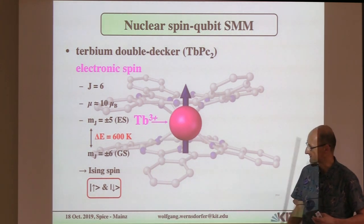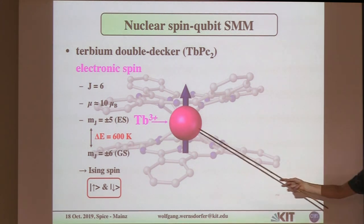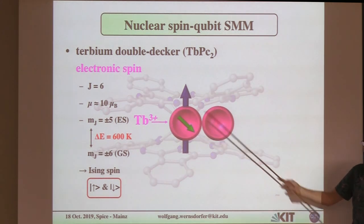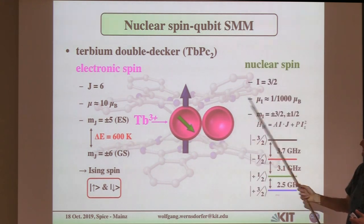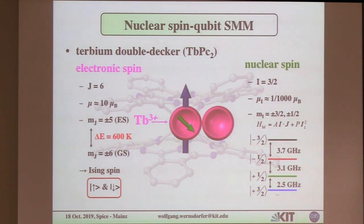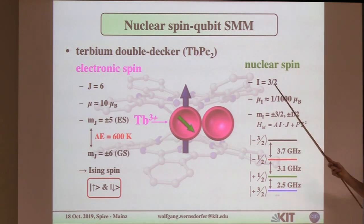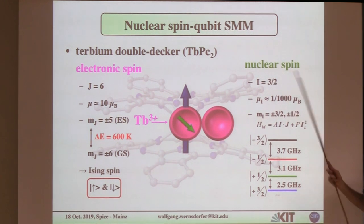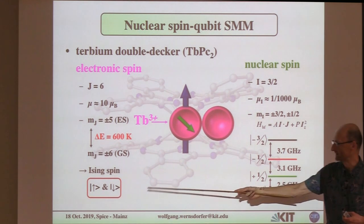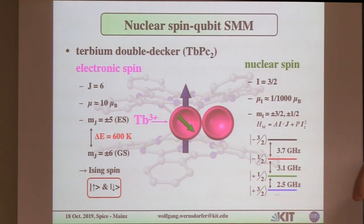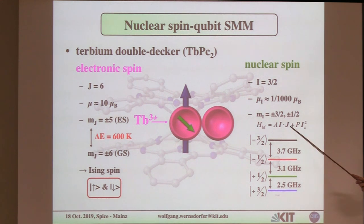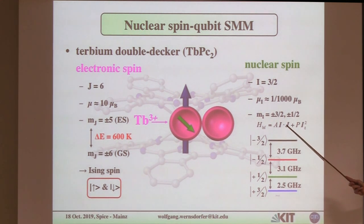Now we have to look a bit more carefully. If you look more carefully at this ion, you see that the nucleus has a nuclear spin. The nuclear spin for terbium is 3/2 — there's only one isotope with I = 3/2. This nuclear spin sees the electronic spin via what is called the hyperfine interaction, which gives a hyperfine term that is quite large for rare earth ions.